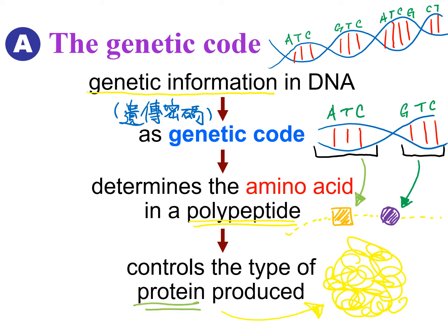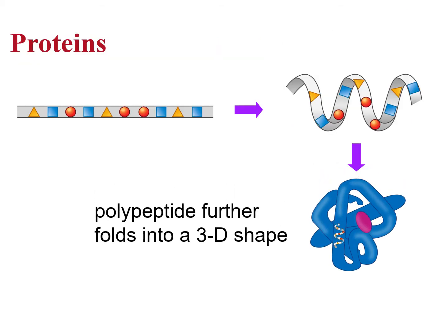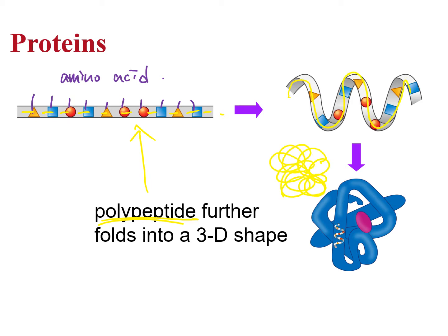And this polypeptide, later on, will coil up and become a three-dimensional ball-shaped protein. And this is how your phenotype is determined. You start from the DNA with the genetic code. Afterwards, you produce the protein to give you the phenotype. As you can see from the picture, each of these are the amino acids. And when they join together, it forms a long chain of polypeptide. And when this polypeptide further coils up, it becomes a three-dimensional-shaped protein.